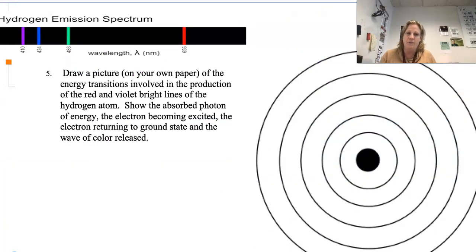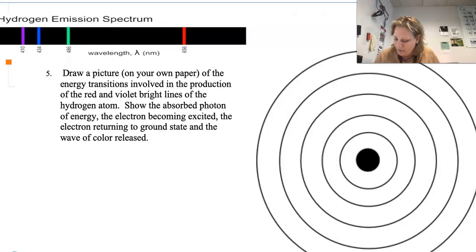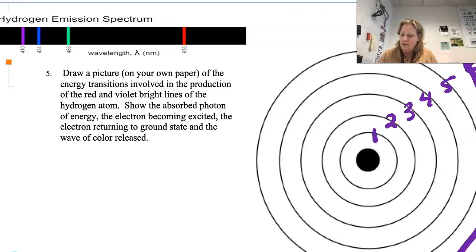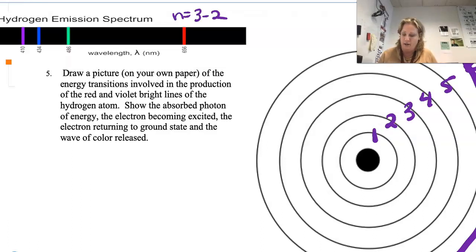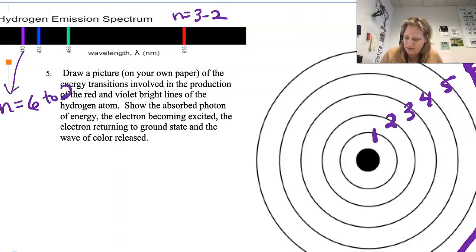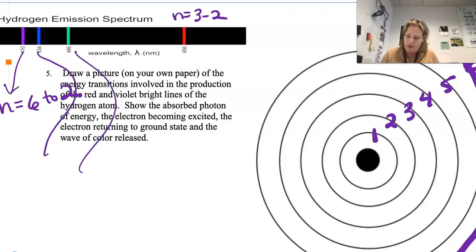Back to the hydrogen emission spectrum: the transitions are quantized, which tells us that the atom's energy levels are quantized. If we number the levels 1 through 6: when the electron moves from n=3 to n=2, that gives us the red color. From n=6 to n=2, that's a bigger energy difference, giving us violet. The other two colors are n=5 to n=2 and n=4 to n=2.